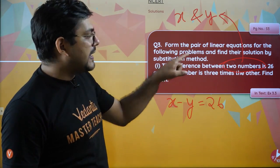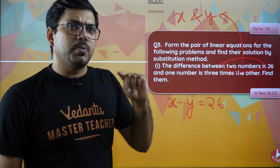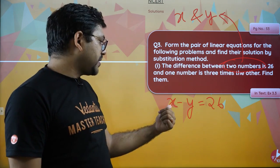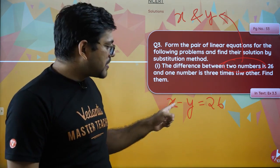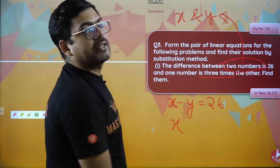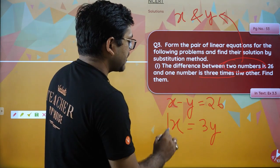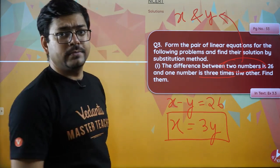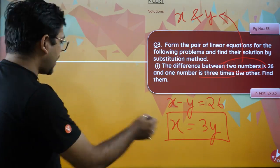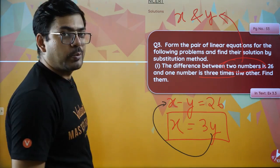Then it says: one number is three times the other. The bigger number would be three times the smaller one. Since we subtract the smaller from the bigger, x must be the larger number. So x equals 3y. Now x's value is 3y, and substitution is already done, because from the second equation we get x = 3y. We just put this value into the first equation.